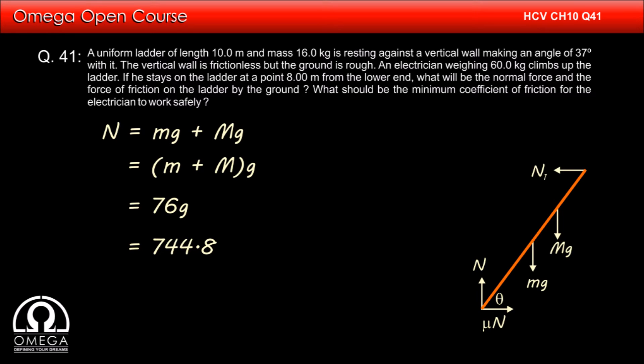the value turns out to be 744.8. Since all the data in the question are given in 3 significant figures, our answer must also be in 3 significant figures. Reducing the value to 3 significant figures, we get normal equal to 745 N. This is our answer.